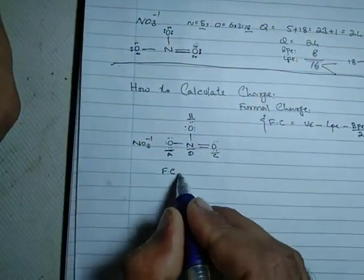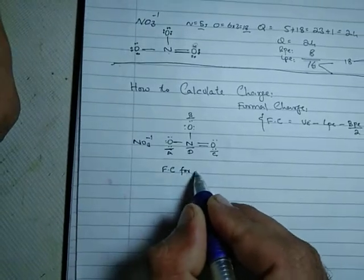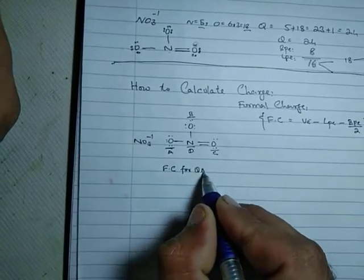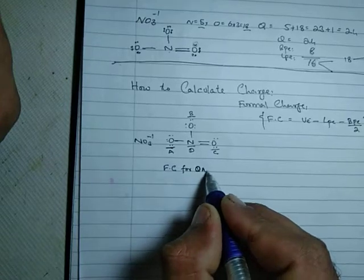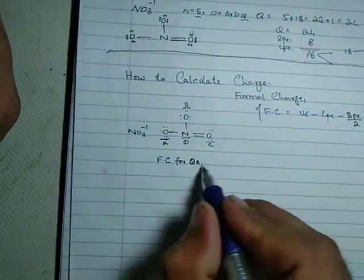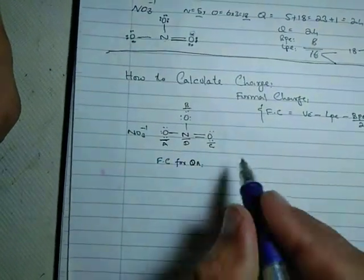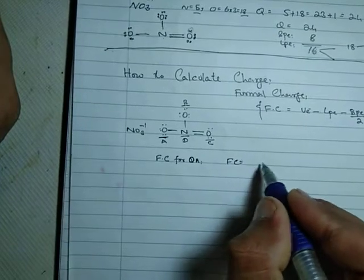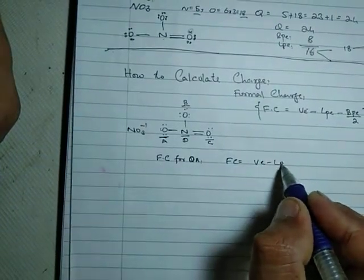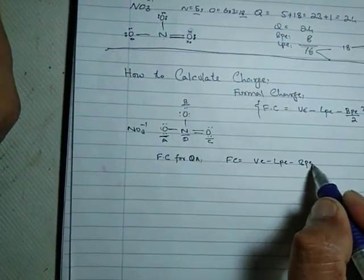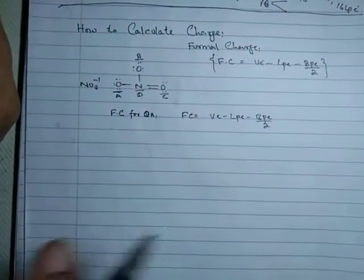Let's calculate the formal charge for oxygen A. The formula is FC equals VE minus LPE minus BPE divided by two.